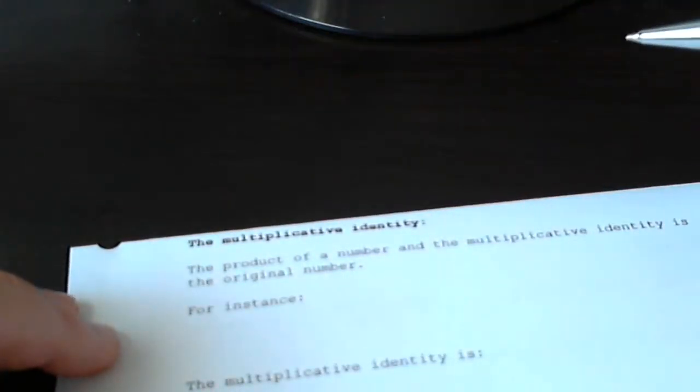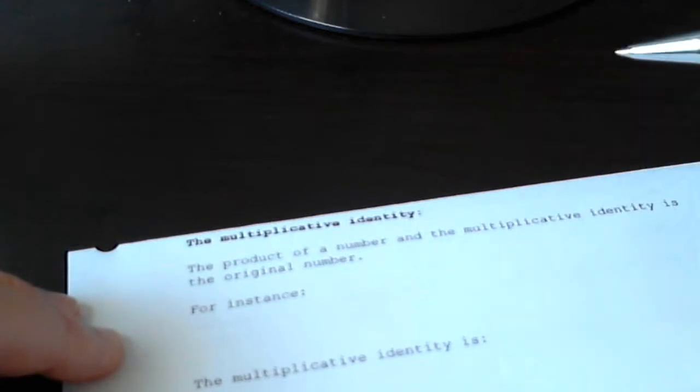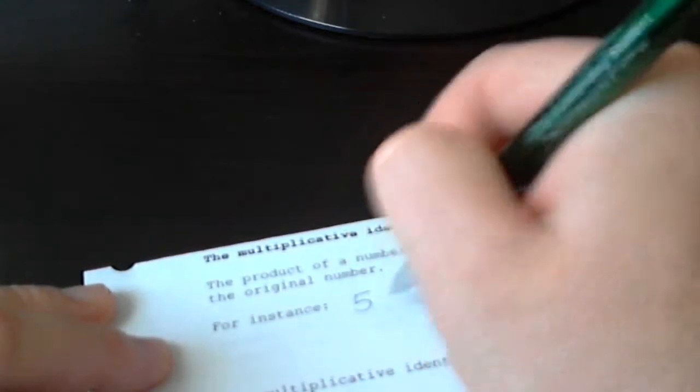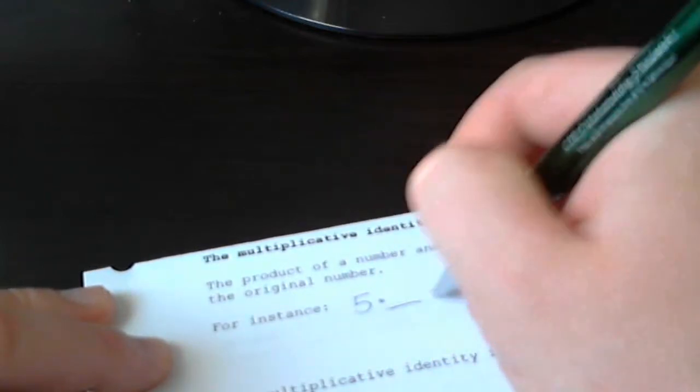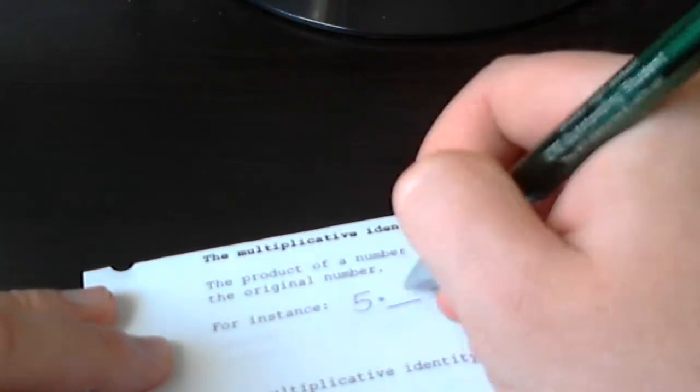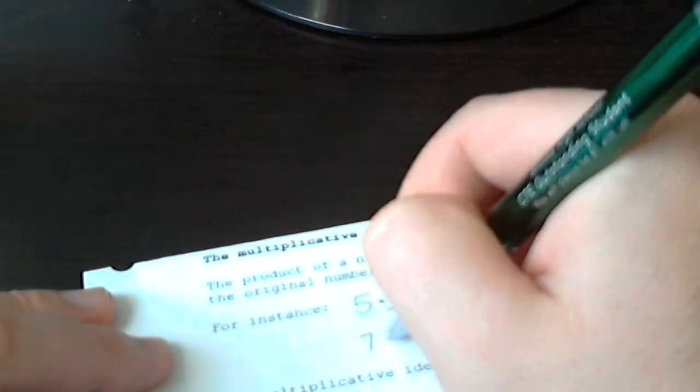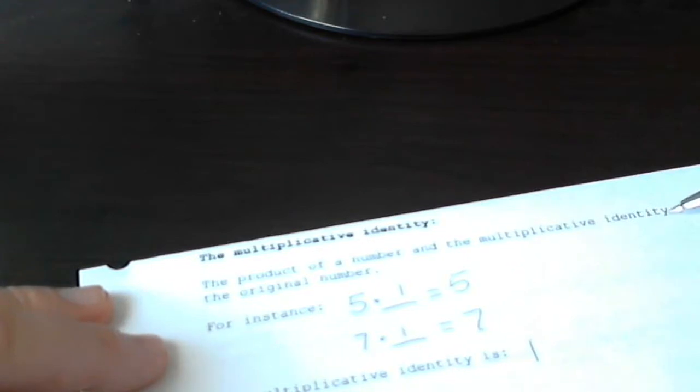We also have something called the multiplicative identity. It's just like how we added 0 to any number. This is the number I can multiply by any number and get that number back. What I'm talking about is 5 times what number gives me 5? It's 1. Just like 7 times 1 gives me 7. So the multiplicative identity is 1.